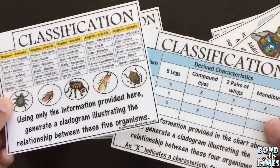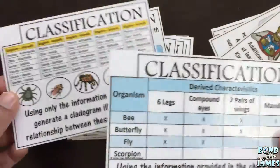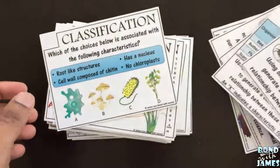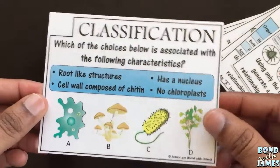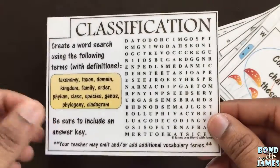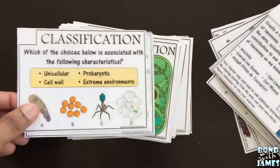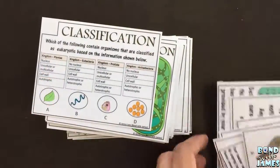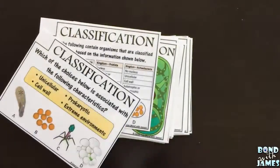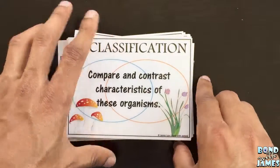They might have to generate a cladogram based on the information presented, and I try to come up with multiple ways of representing this so that students can see multiple representations of that type of question. There are multiple choice questions, compare and contrast, create a word search using terminology they may have learned in class, and they may have to create a timeline. There are various cards in this set that students can use, or the teacher can use to assess student learning in class.